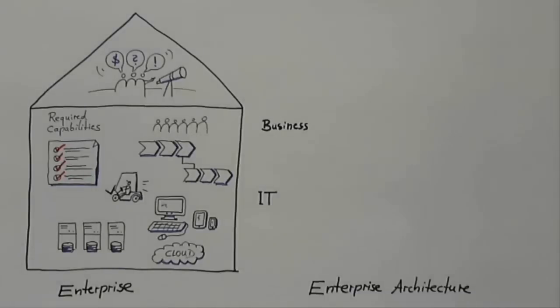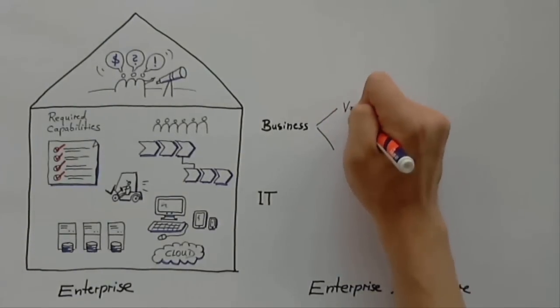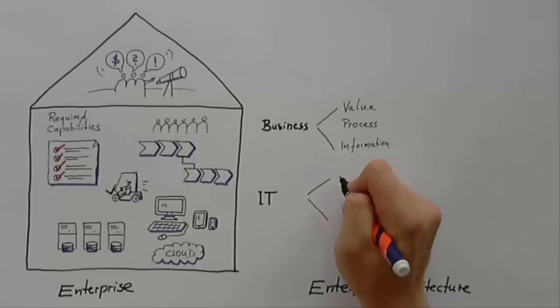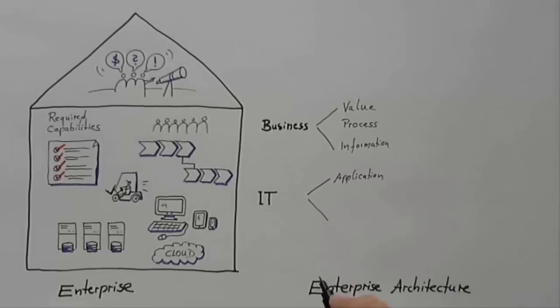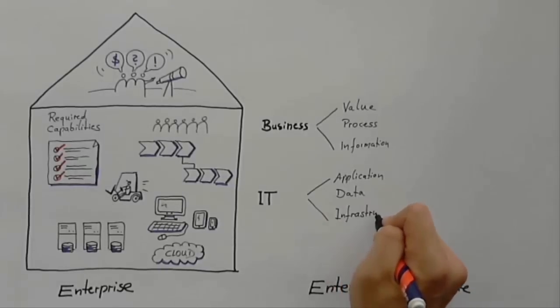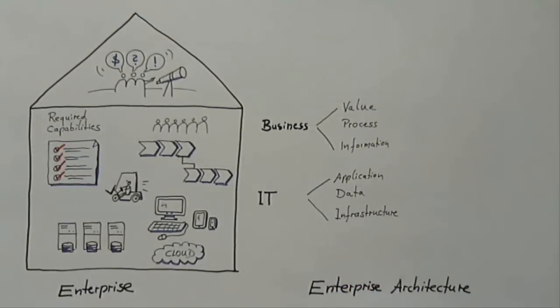This includes elements such as value, business processes, required information and applications, the data that is generated, and infrastructure required by the enterprise in question. Enterprise architecture comes with a set of methods and models that help to create this kind of picture. And standards are available, for example from the Open Group Architecture Framework, TOGAF.